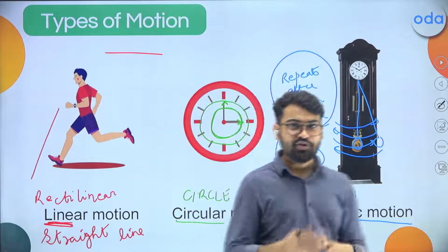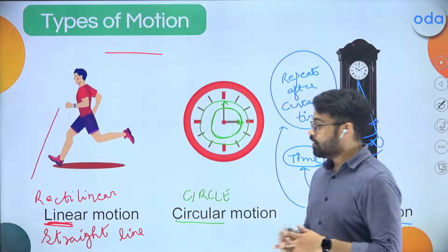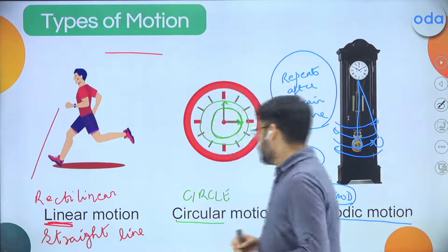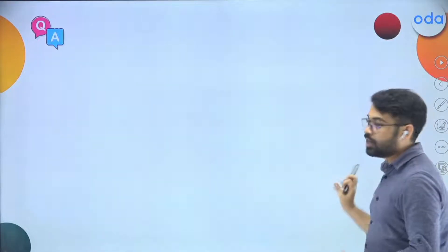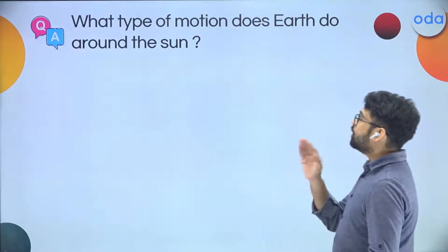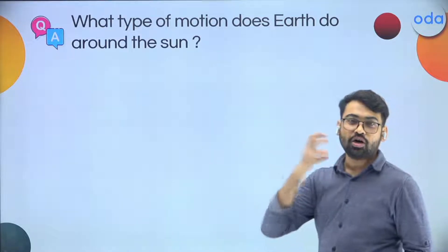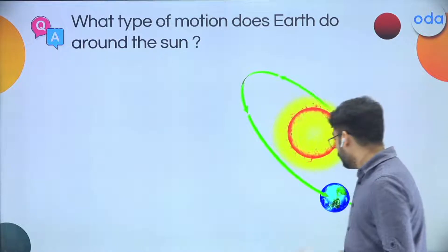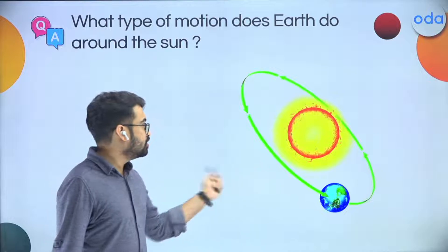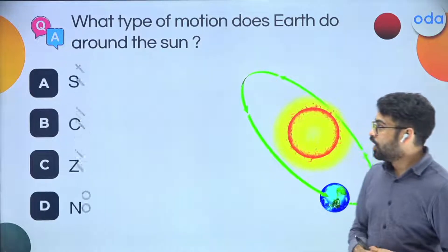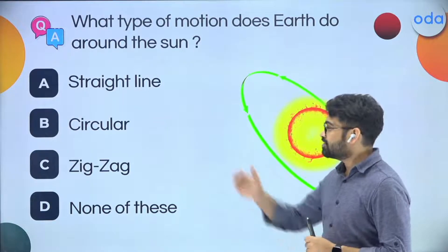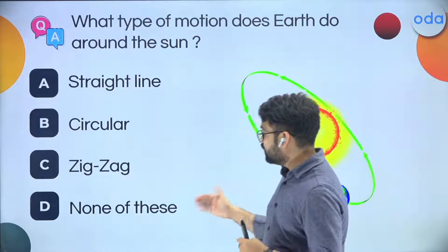I hope you understand that everything has a real-life example, and I hope you have understood all three motions very comfortably. Now I have a set of questions for you. Let's go to the Q&A section. The first question: what type of motion does Earth do around the Sun? Earth goes around the Sun — what type of motion is it? Option A is straight line motion, B is circular motion, C is zigzag motion, and D is none of these.